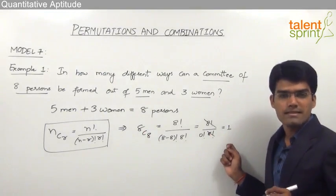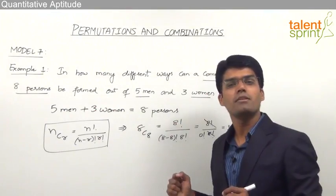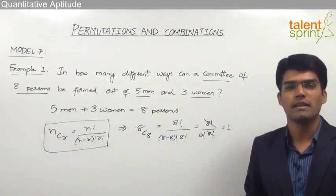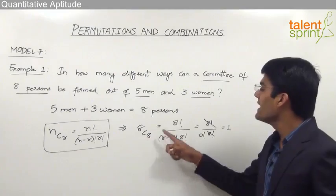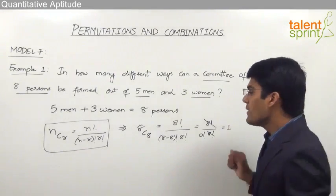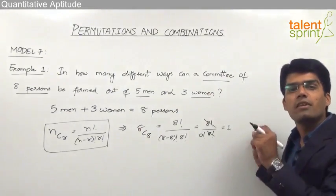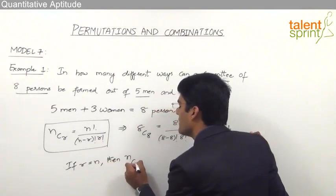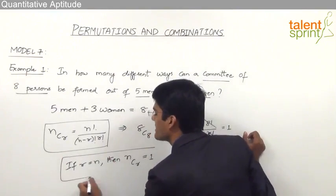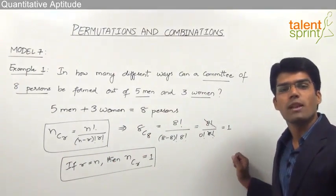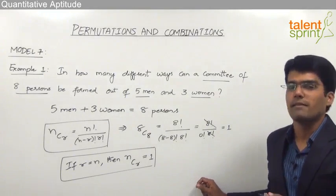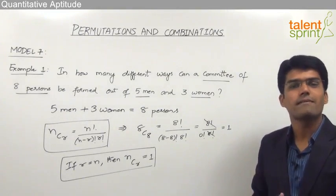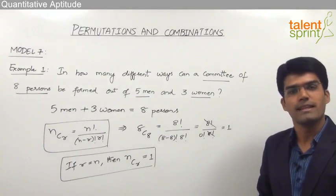Since there are total 8 persons and we need to form a committee of 8 persons, we don't have any choice — all 8 persons have to be selected, and that can be done only in one way. So that is the reason 8C8 = 1. Whenever r is equal to n, nCr will be equal to 1. For example, 6C6 = 1, 12C12 = 1, 25C25 = 1, because in all these cases we are selecting all the given persons, so we can do it only in one possible way.